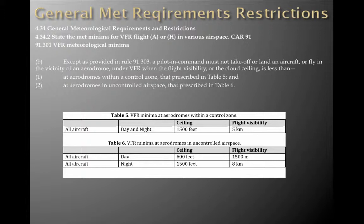VFR minima at aerodromes in uncontrolled airspace — Class G airspace. All aircraft day: ceiling of 600 feet and flight visibility of 1,500 meters. And at night, all aircraft: 1,500 feet ceiling and 8K flight visibility. That one is a lot easier to understand.